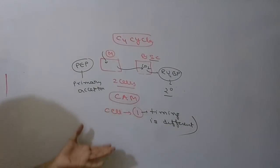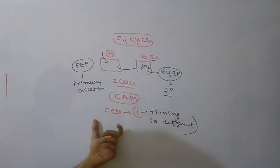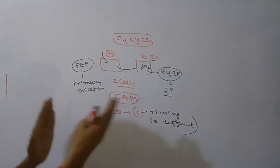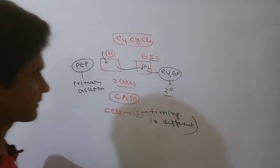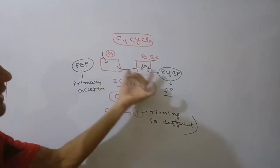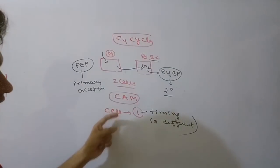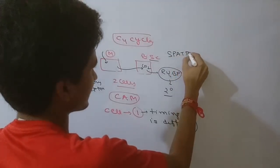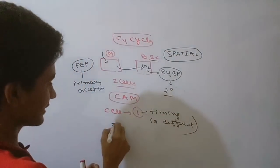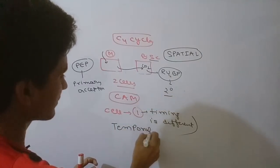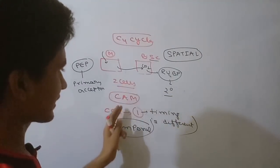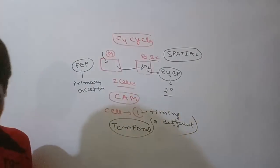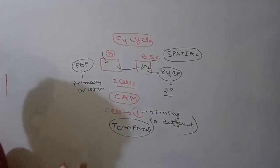The differentiation is that in C4 plants there is a spatial difference - the cycle occurs in different places. In CAM plants, we get the same place but timing is different. There is a temporal difference - time-based difference rather than spatial difference.